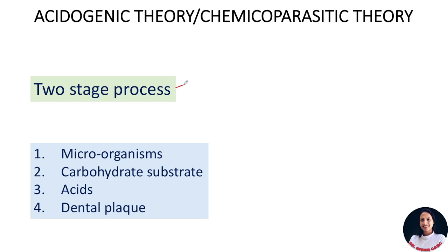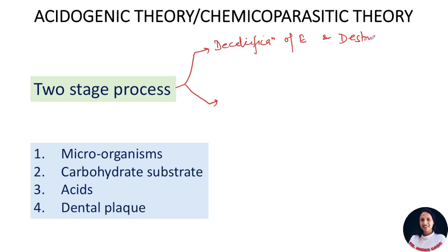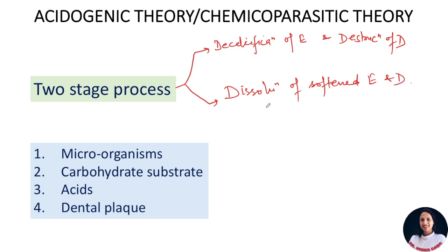Miller said that the caries process occurs in two stages. In the initial stage, there occurs the decalcification of enamel and destruction of dentine. In the second stage, there occurs the dissolution of the softened residue of enamel and dentine. For these two processes, Miller showed four important factors: the role of microorganisms, carbohydrate substrate over the tooth surface, acids, and dental plaque.